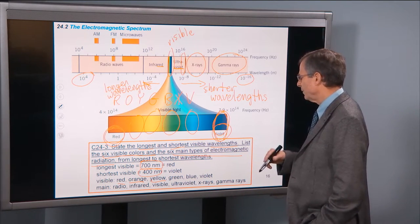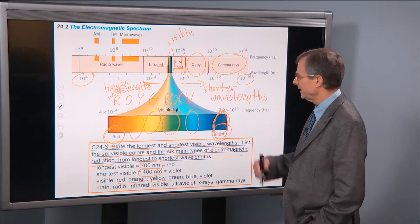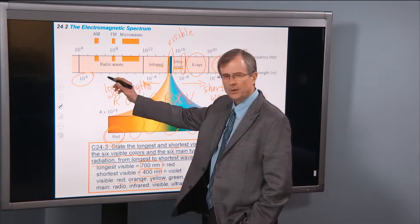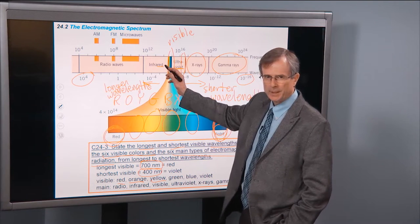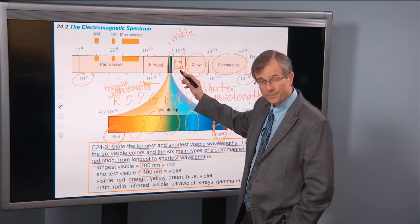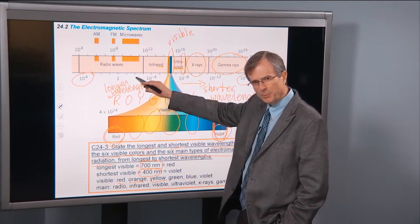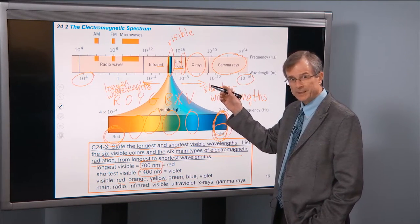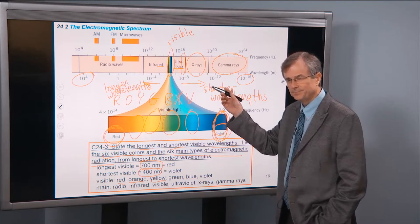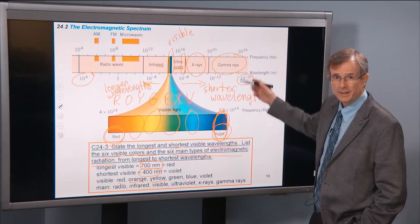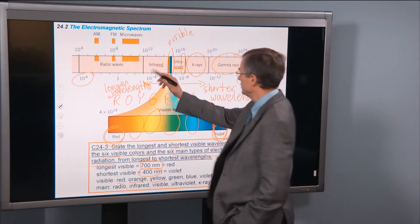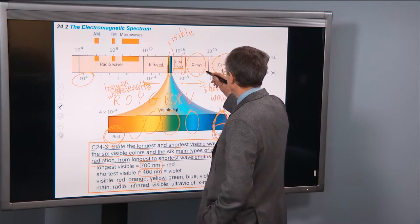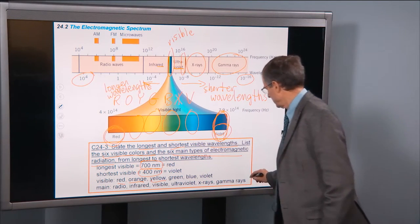So, from largest wavelength to shortest wavelength, we've got radio, then infrared, then visible, then as we're going through visible, remember we're going through red and then through violet. So then ultraviolet, just on the edge of violet, then x-rays and then gamma rays. So those are the six.